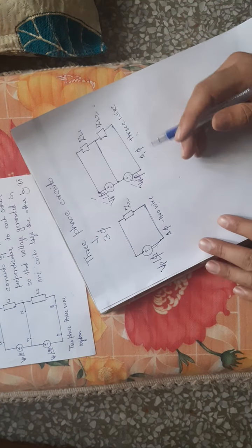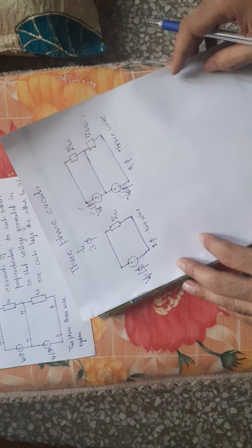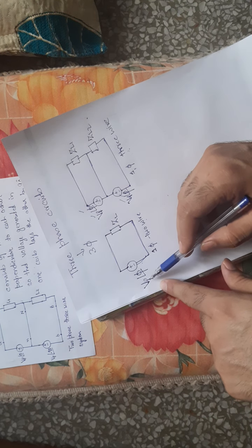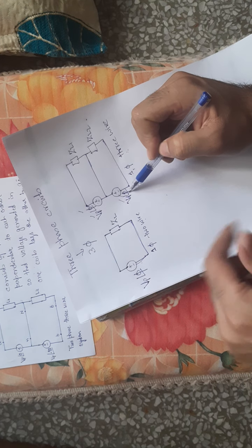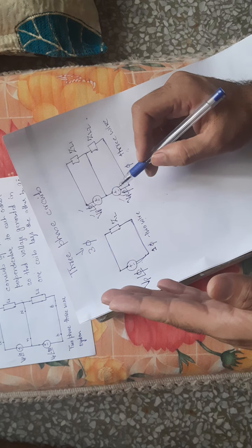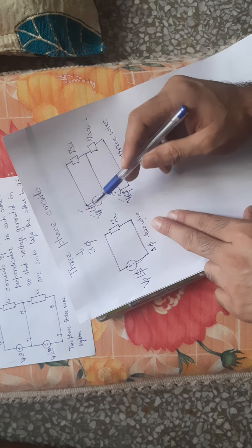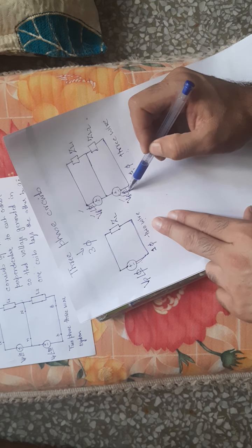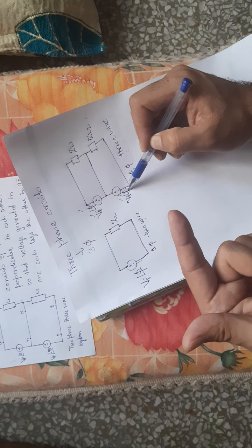In a single-phase system the sources have the same magnitude and same phase. However, if circuits are operating at the same frequency with equal magnitudes but different angles, these are called polyphase systems.